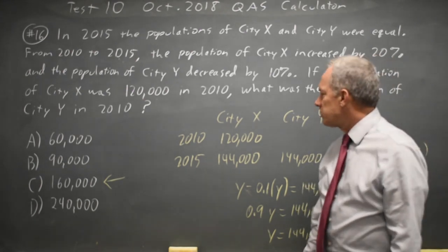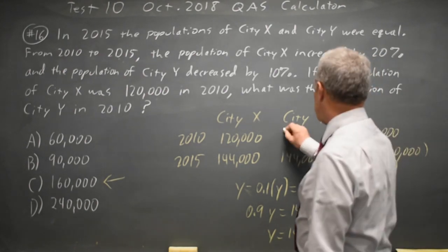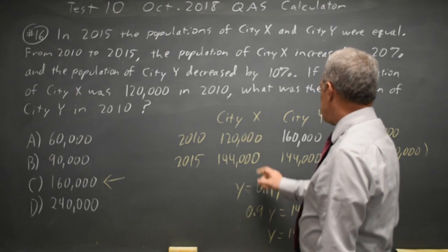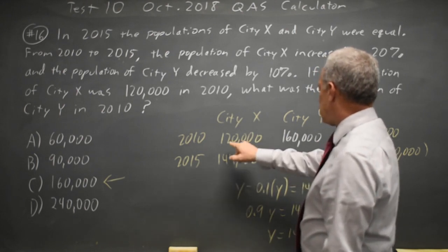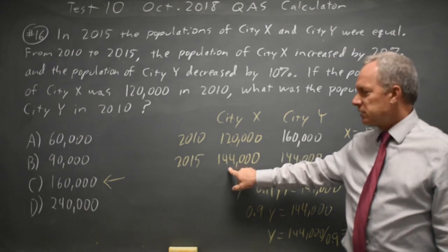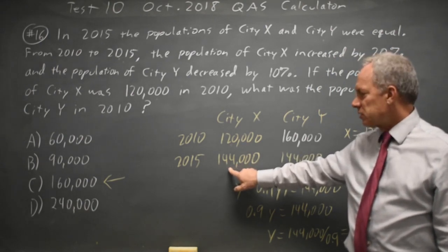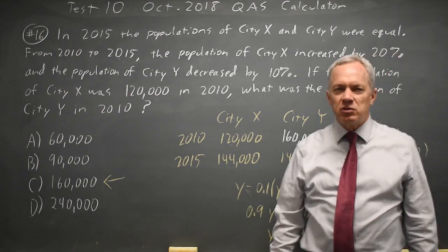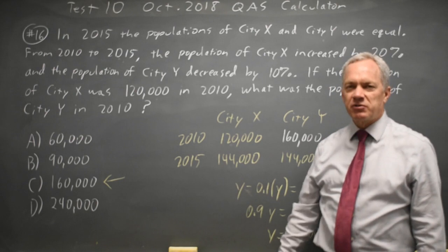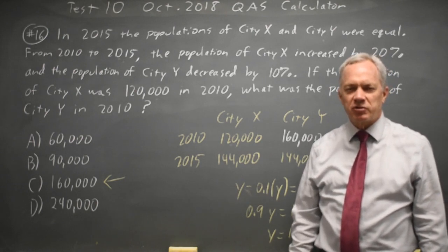You'll notice that 20% of 120,000 is 24,000, but 20% of 144,000 is more than 24,000. So taking the percent from the first to the second number is different from taking the percent from the second number to the first number.